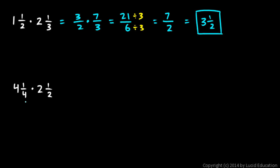And down here, 4 and a fourth times 2 and a half. 4 and a fourth, 4 times 4 is 16, plus 1 is 17, so that's 17 over 4 times 2 and a half. 2 times 2 is 4, plus 1 is 5, over 2, 5 halves. So 17 times 5, that's 85, over 4 times 2 is 8.